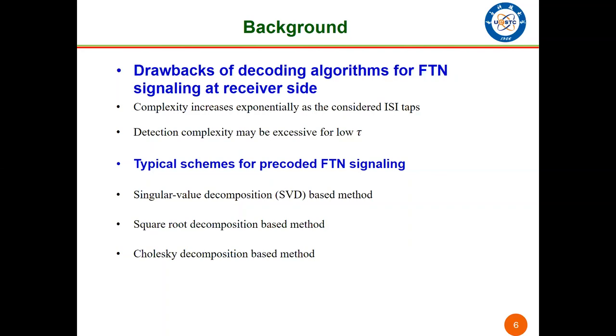Some linear pre-coded FTN depends on the decomposition of the ISI matrix, and typical schemes are singular value decomposition, square root decomposition, and Cholesky decomposition-based methods.